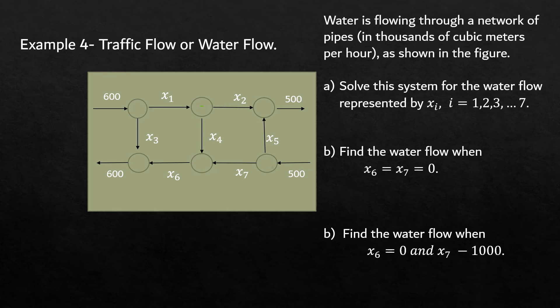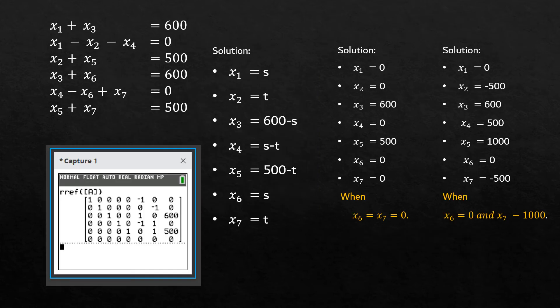If we are talking about the water flow or traffic flow, if the flow is like this, for the first one, we will have 600 as the input. x1 plus x3 is the output. x1 and x2, x3 are the output. So for all those six junctions, we can find the equations like this. Take the augmented matrix, find the reduced row echelon form so that you can get the seven values. x1, x2, x3, x7. And a specific value when x6 is equal to zero and x7 is equal to zero. That is when s equal to zero, t equal to zero, we can find the solutions. And also when x6 equal to zero, when x is zero and x7, which is t is negative 1000, we can also find the value for this.